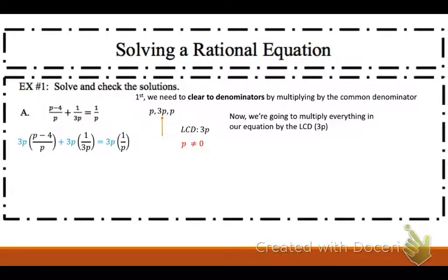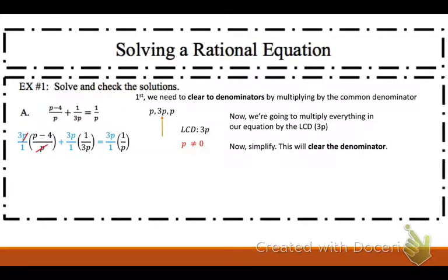I have 3p times p minus 4 over p, and 3p times 1 over 3p, and 3p times 1 over p. I'm just going to put those all over 1, because you can always put anything over 1. Now I simplify each rational expression separately. 3p over 1 times p minus 4 over p — the p's cancel, so I'm left with 3 on top. Then 3p times 1 over 3p — the 3p's cancel. And the last one, the p's cancel.